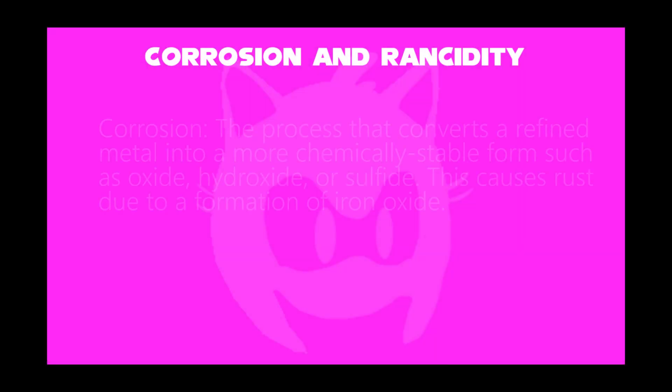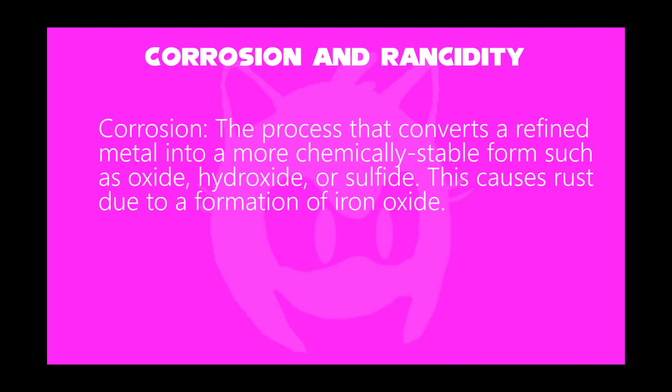First section, called corrosion — the process that converts a refined metal into a more chemically stable form such as oxide, hydroxide, or sulfide. The most common type of corrosion is the formation of rust, or iron oxide, on the surface of metals containing iron, when they come into contact with oxygen.